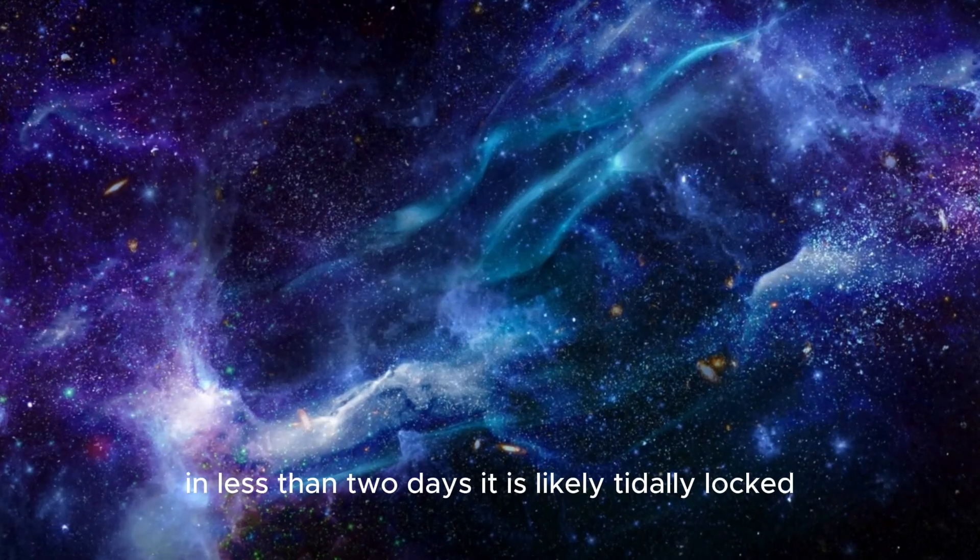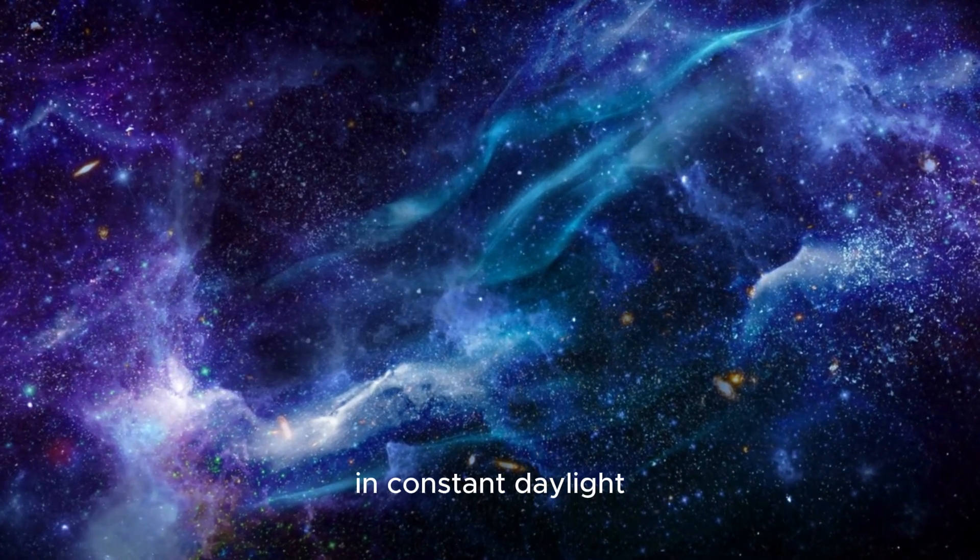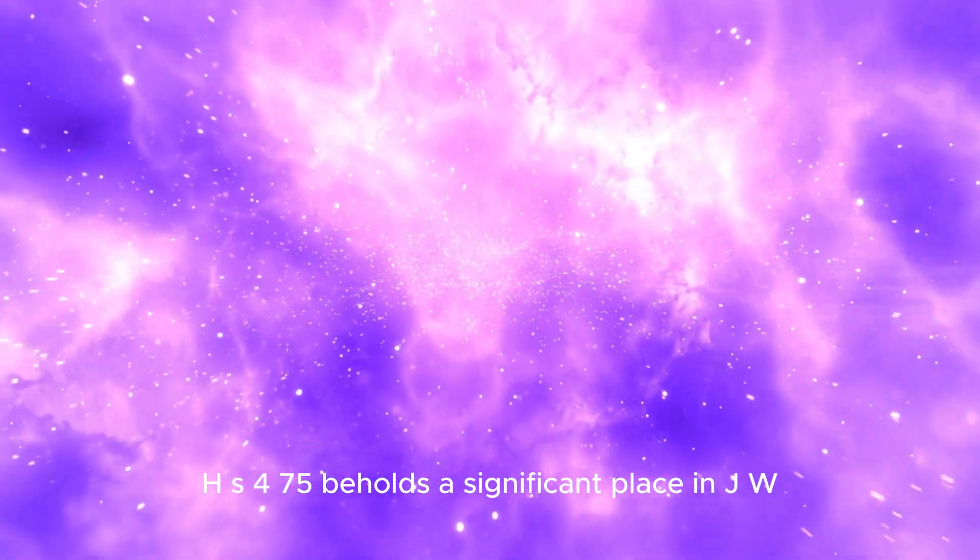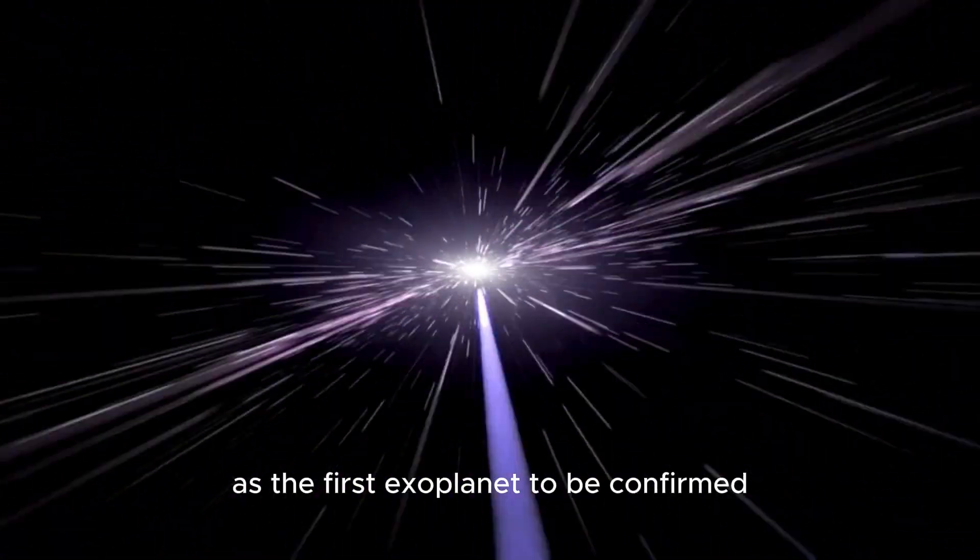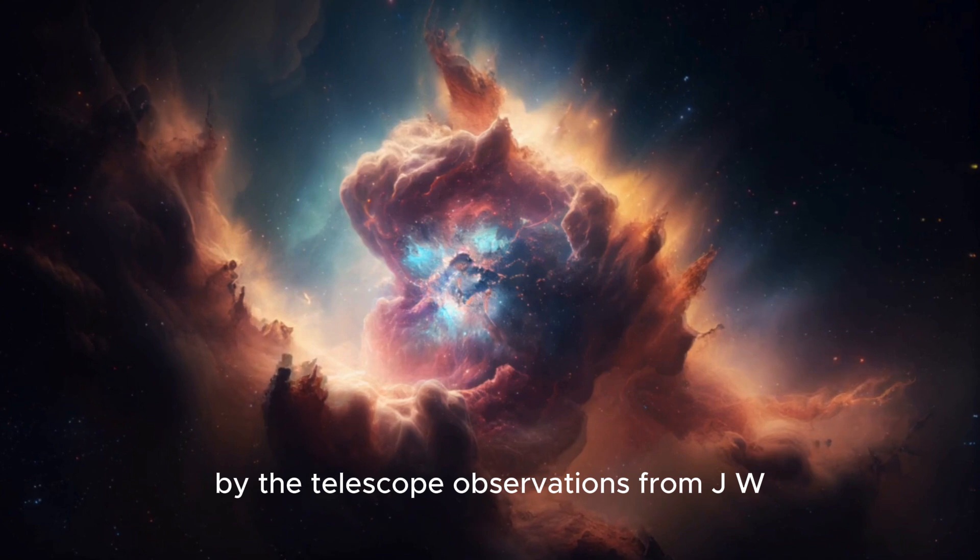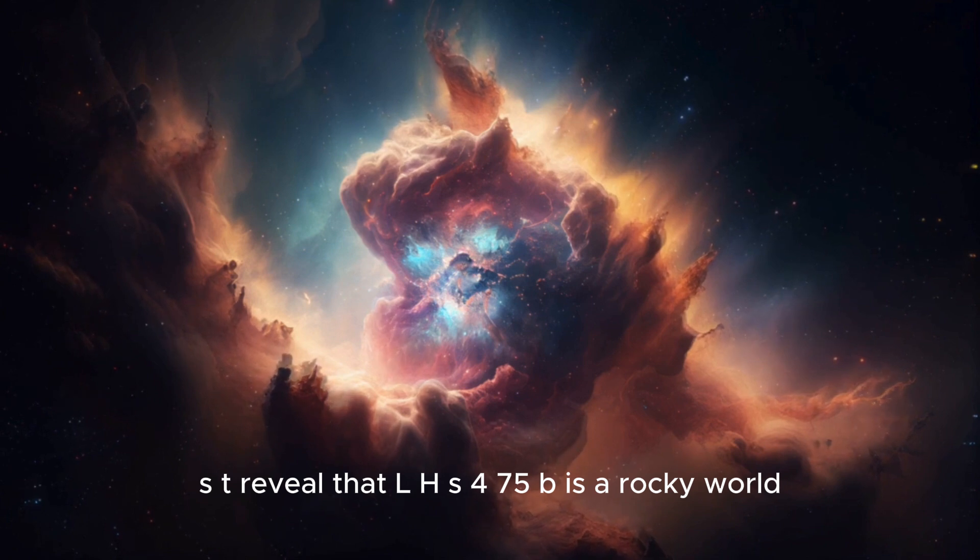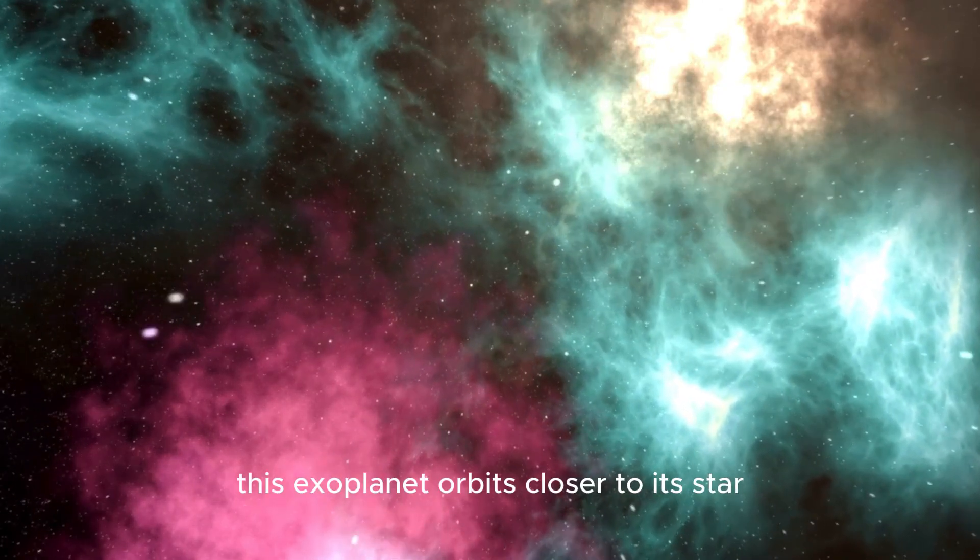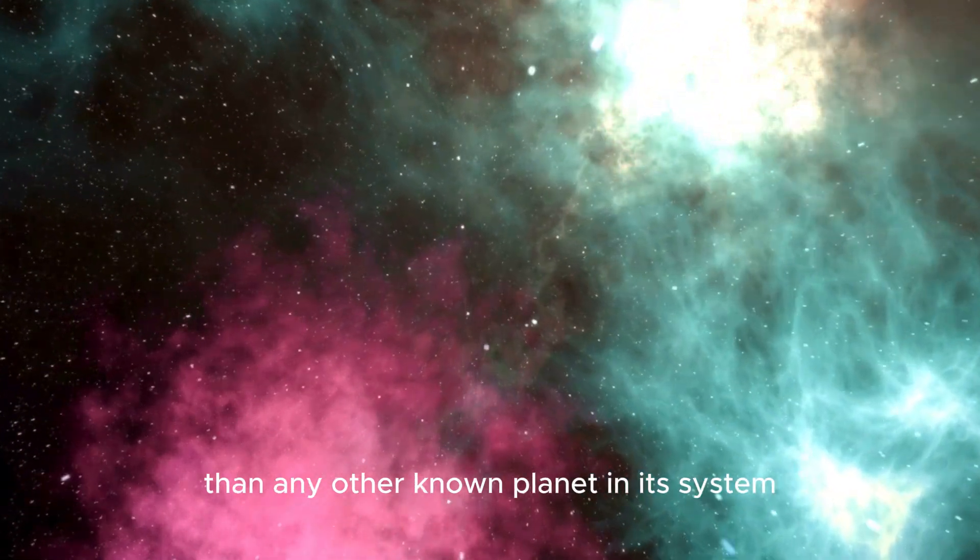It is likely tidally locked, meaning one side perpetually faces its star in constant daylight while the other side remains shrouded in darkness. LHS 475b holds a significant place in JWST's history as the first exoplanet to be confirmed by the telescope. Observations from JWST reveal that LHS 475b is a rocky world, and scientists were surprised by its unique atmospheric composition. This exoplanet orbits closer to its star than any other known planet in its system.